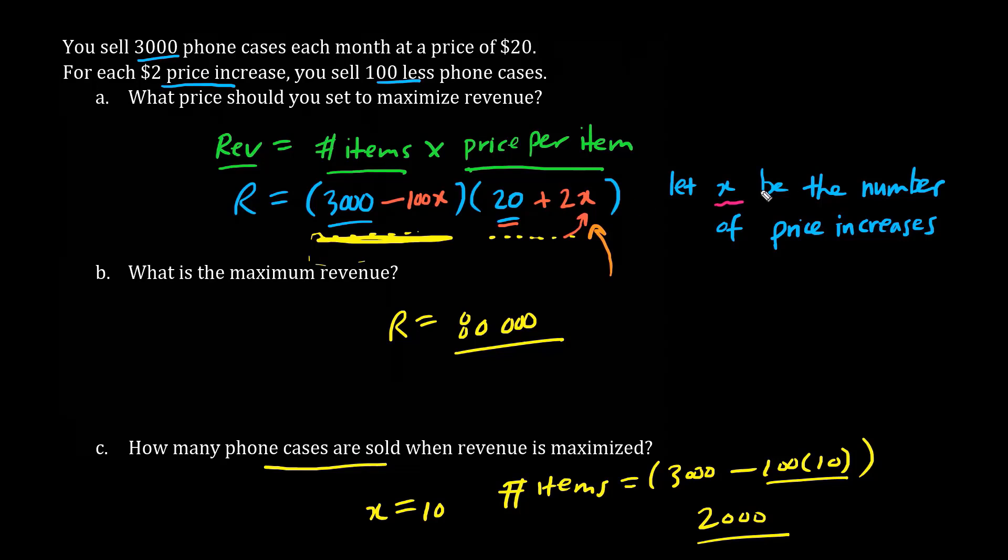Let's, just out of curiosity, figure out the price per item. When x equals 10, the price equals 20 plus 2 times x, and x is the x-value of the vertex, which is 10. We have 20 plus 20 is 40, so the optimal selling point is $40. And $40 times 2,000 is $80,000.